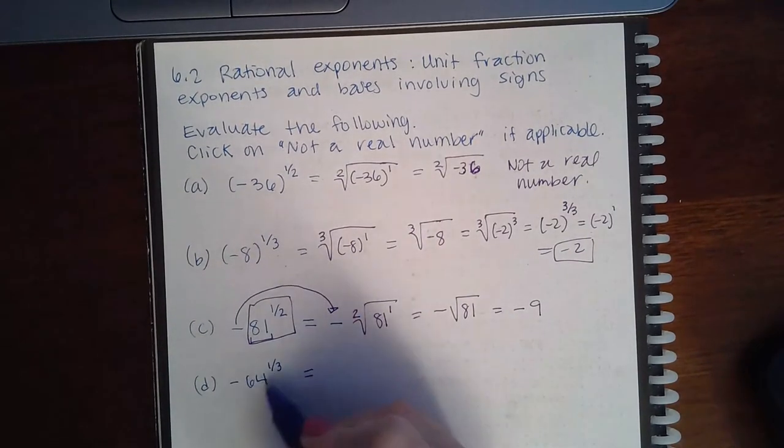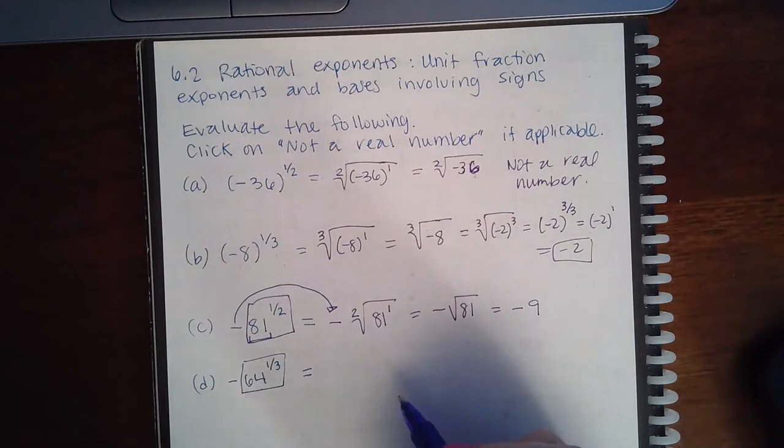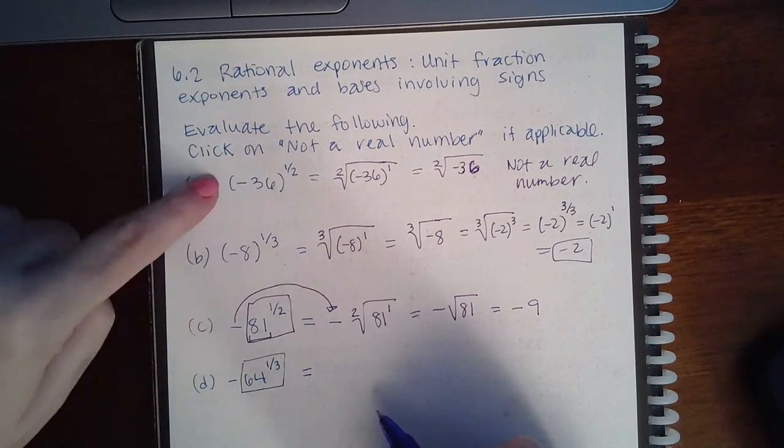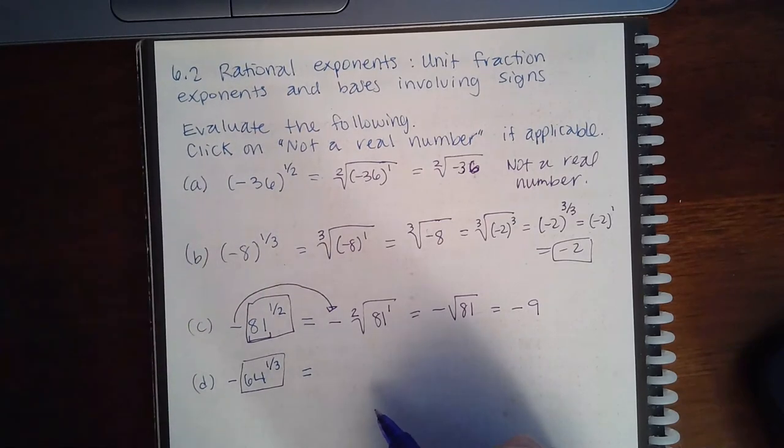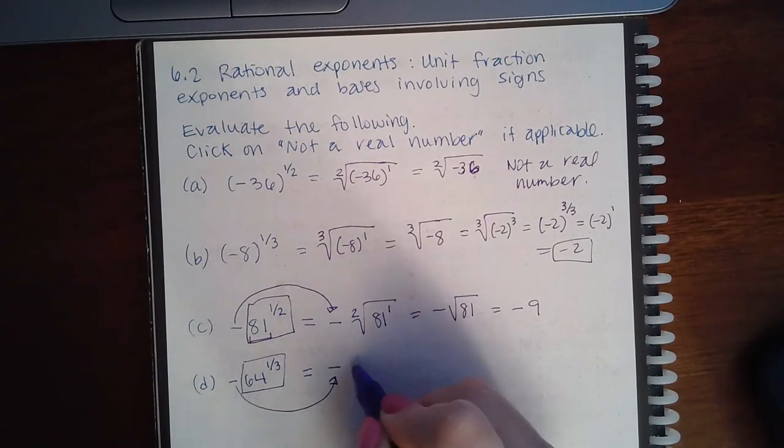Same thing here. The only base I have is 64. The negative is just out in front. If they wanted me to include the negative as the base, they would have had it in parentheses like they did in part A and part B. So that's probably going to be the biggest issue with this problem.